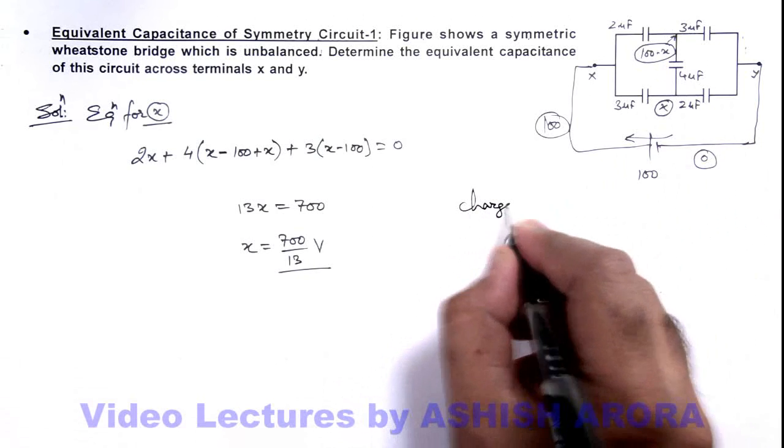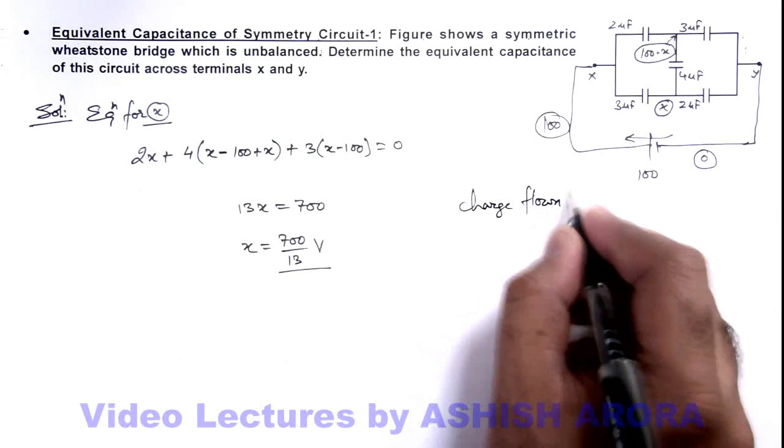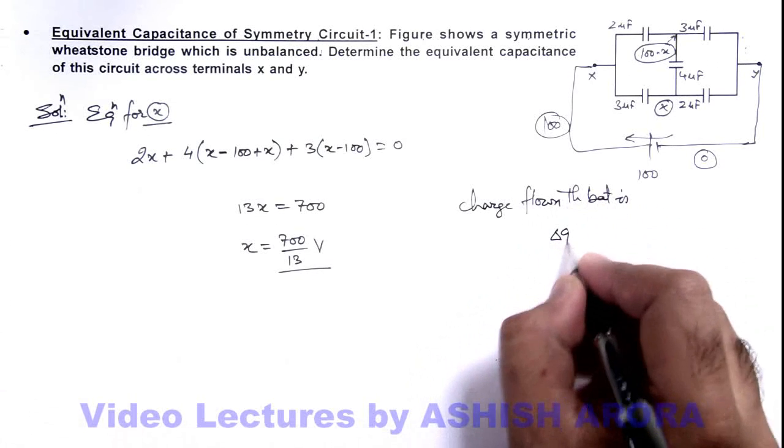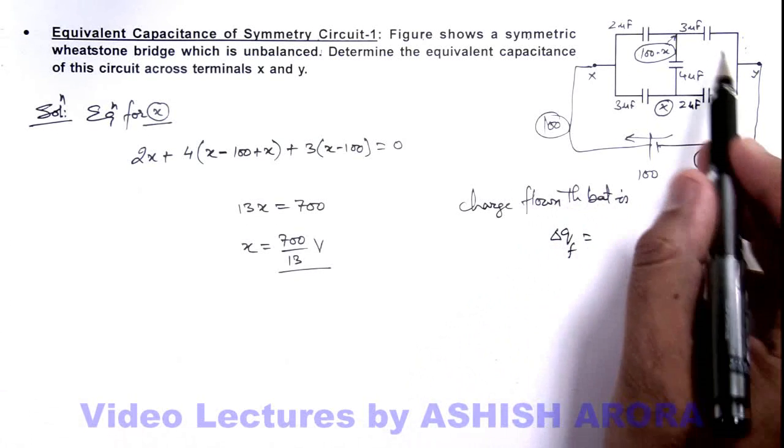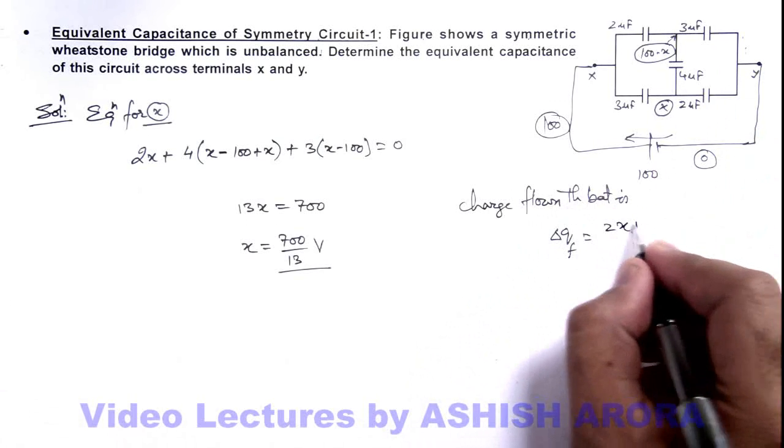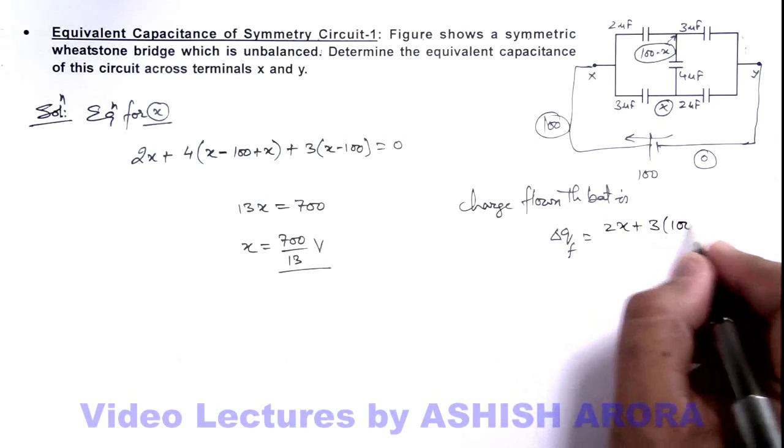The charge flown through battery is delta q f, and this will be the sum of charges on these 2 capacitors, that is 2x plus 3 times hundred minus x.